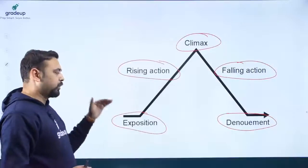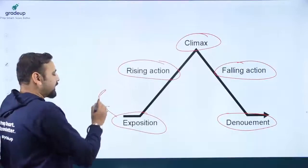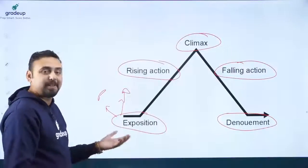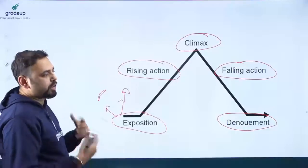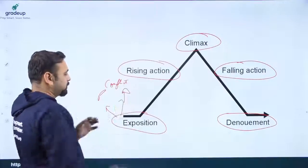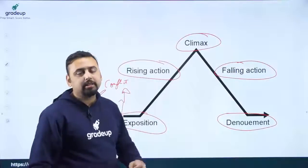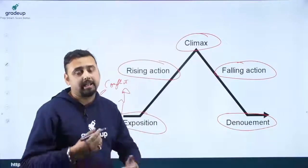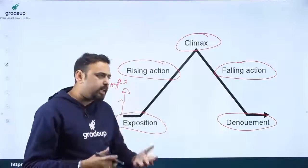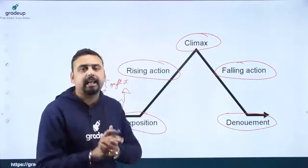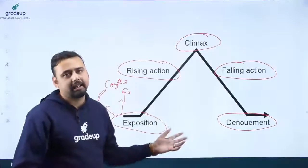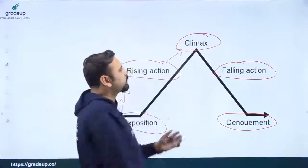In the exposition, we have the protagonist, the antagonist, and primary characters — the hero and heroine are introduced — and we also learn what the conflict is between the antagonist and the protagonist. In the rising action, this conflict keeps rising. Secondary characters who support either the antagonist or protagonist also enter, and in a tragedy, characters on the antagonist's side try to harm or create more difficulties for the protagonist.